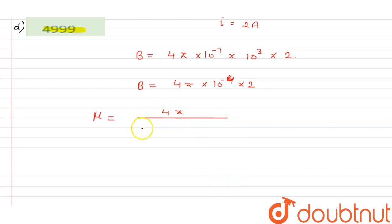4π divided by B, that is 4π × 10⁻⁴ × 2. So 4π and 4π will cancel out and you will get the value will become μ equals 10⁴ divided by 2.